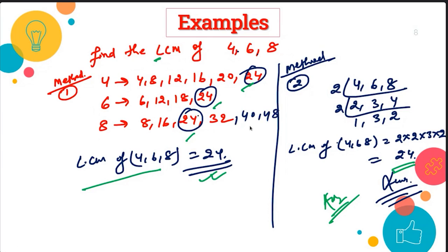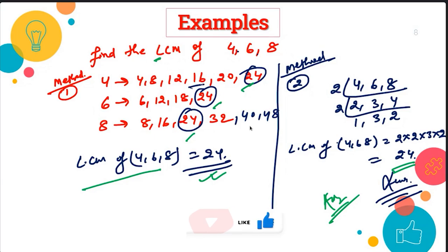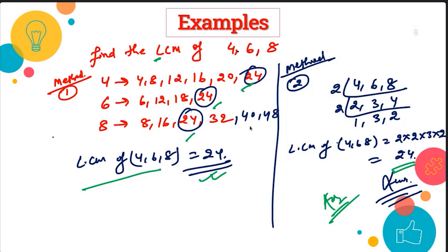Now try to find the common numbers — a number that is present in all three lists. Four is here but not in all. Eight is in two lists but not all. 12 is in two but not all. 16 is in two but not all. 20 is only in one. Now 24 — this 24 is available in all three lists. So we can say that 24 is the Least Common Multiple. This is the smallest number present in all. So the LCM of four, six, and eight is 24.